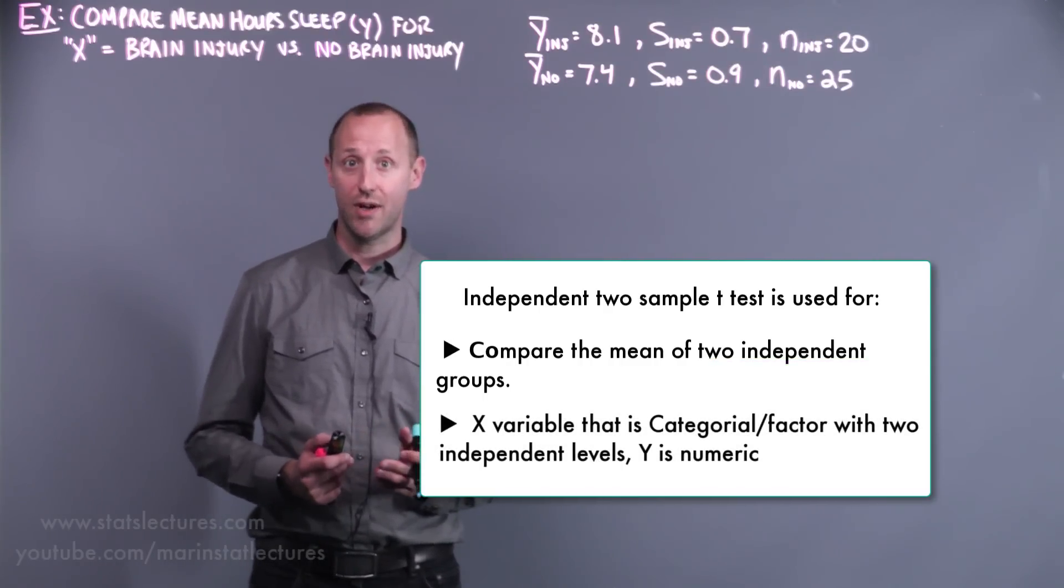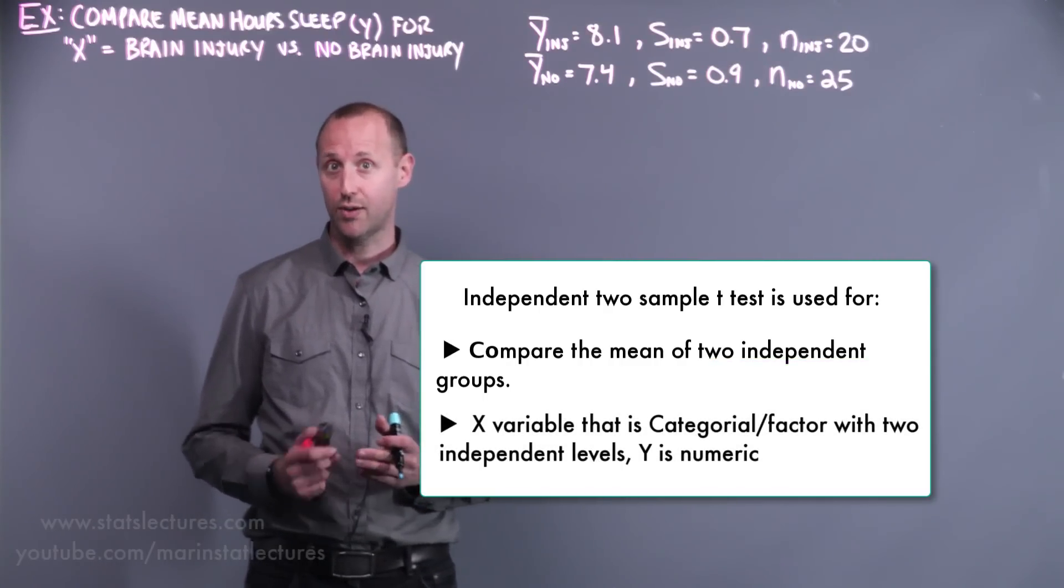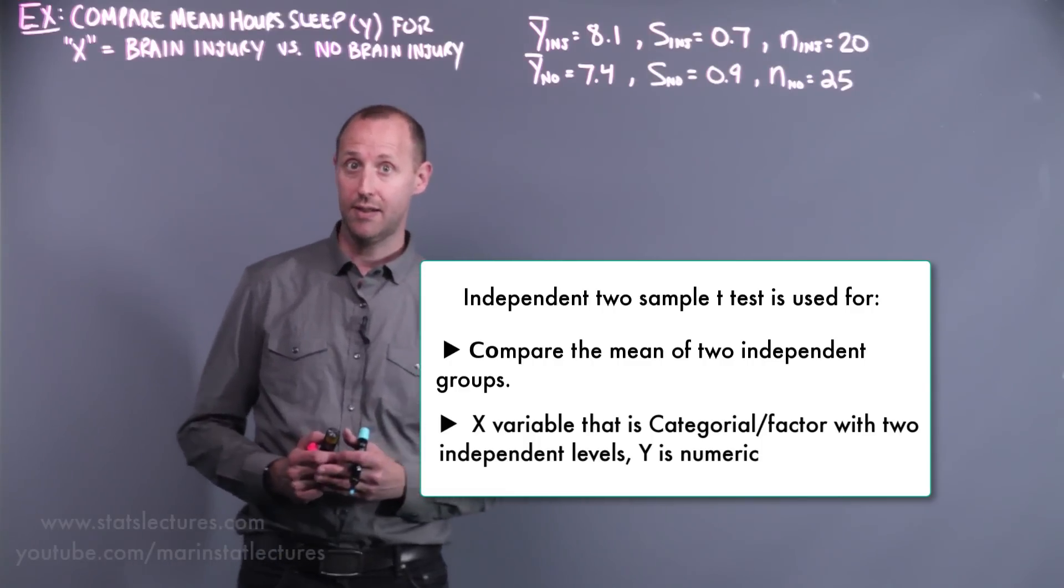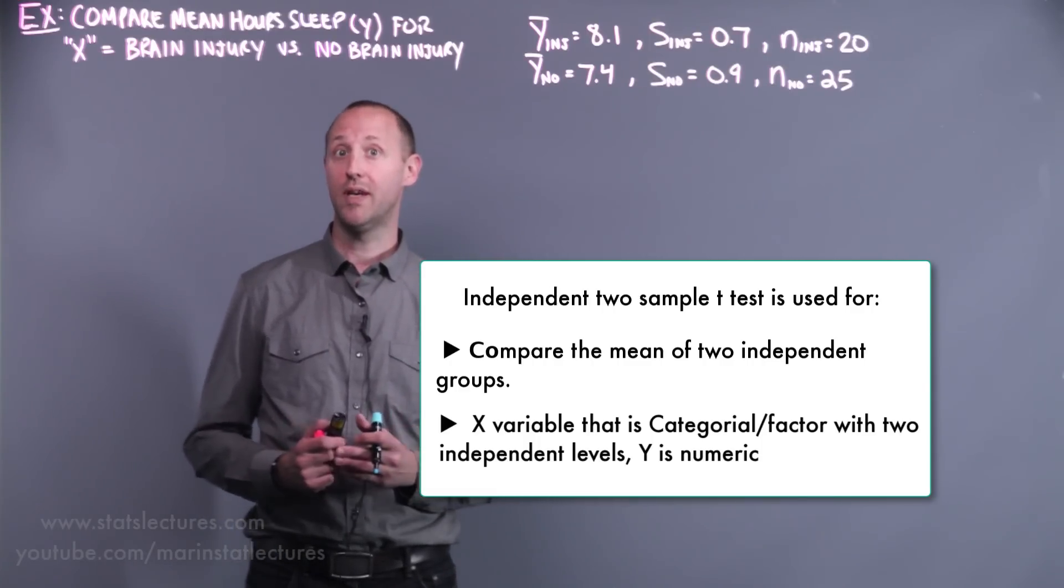In other words, when you have an x variable that's categorical or a factor with two levels, and those groups being independent, and our y variable being a numeric measurement.